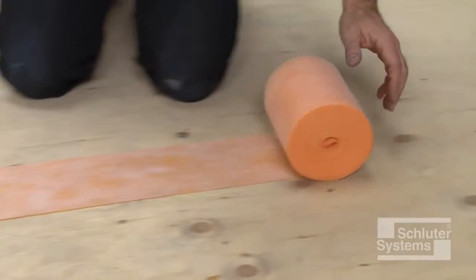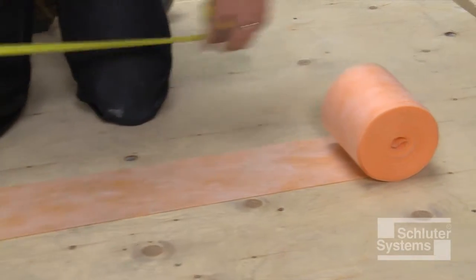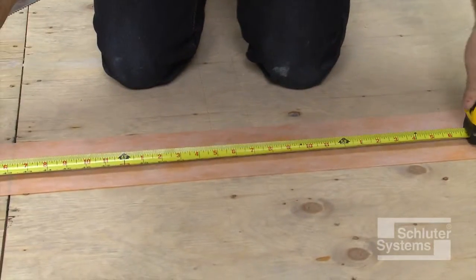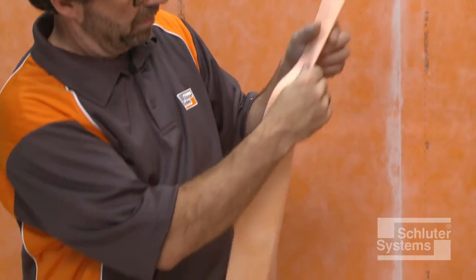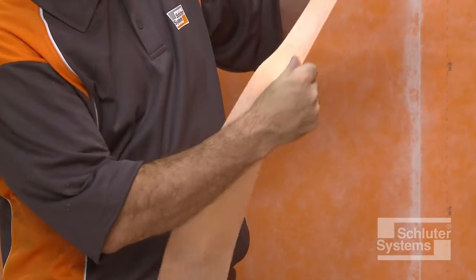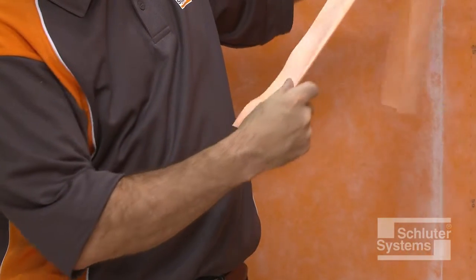Schluter-KERDI band waterproofing strips are used to seal the DITRA matting to the curb. The band may be creased prior to installation to help maintain tight corners and make subsequent tile setting as easy as possible.